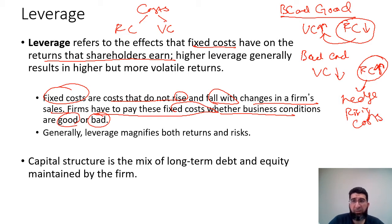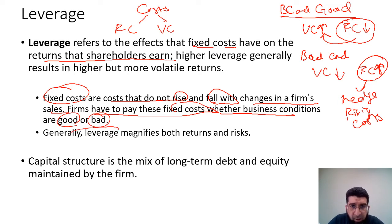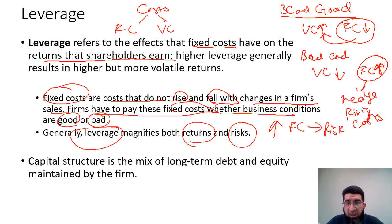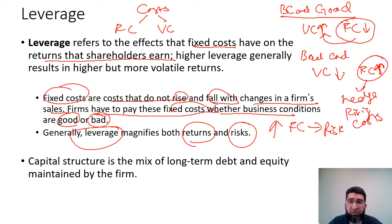This hedge is normally used in bad times. Generally, leverage magnifies both returns and risks. If you increase the fixed cost, the risk increases — the risk of tying up capital in fixed costs that will be incurred whether conditions are good or bad. Fixed cost creates risk, and that risk increases with increases in fixed cost; hence we must be compensated with higher returns.